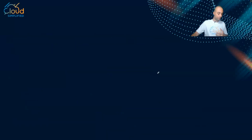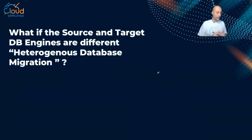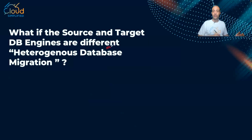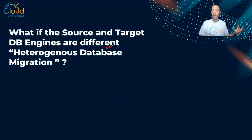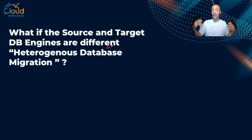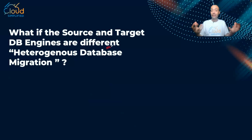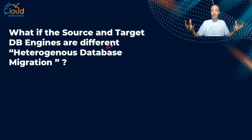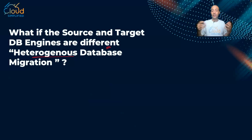What if the source database and target database engines are different? For example, you are migrating from Microsoft SQL or Oracle, and migrating to something like Amazon Aurora. This presents a challenge because you don't have the same database engine — and this is what we call a heterogeneous database migration.